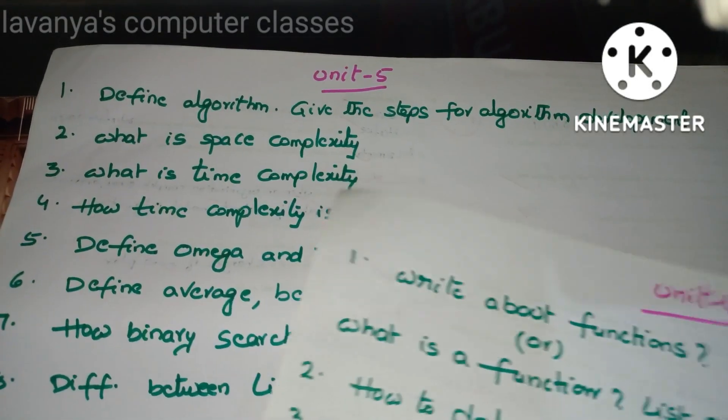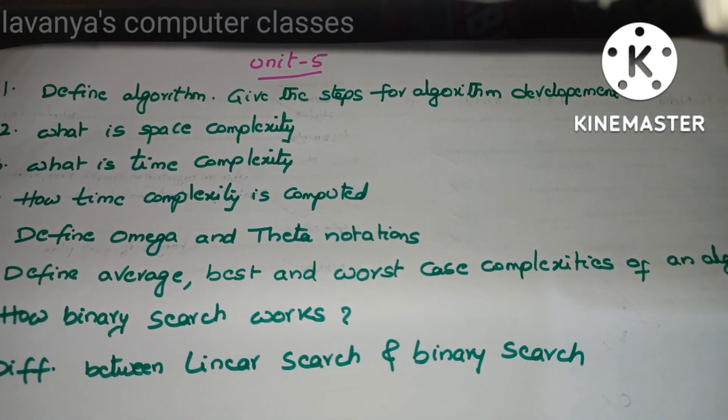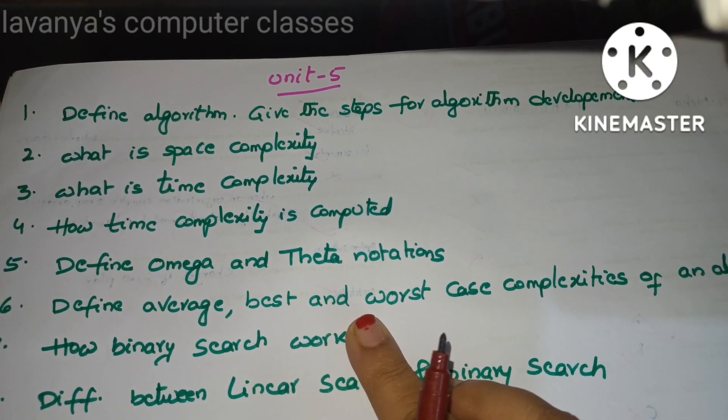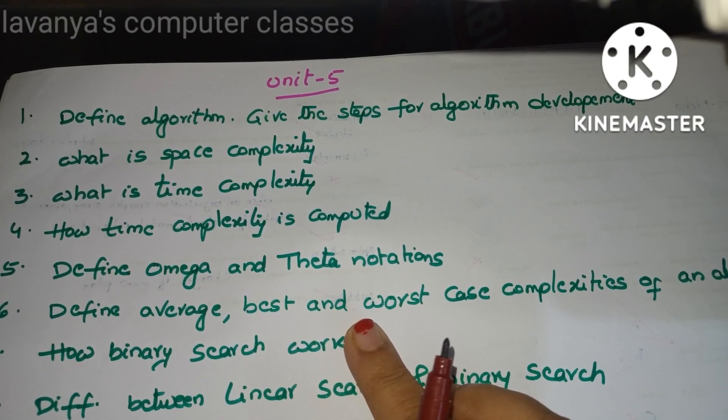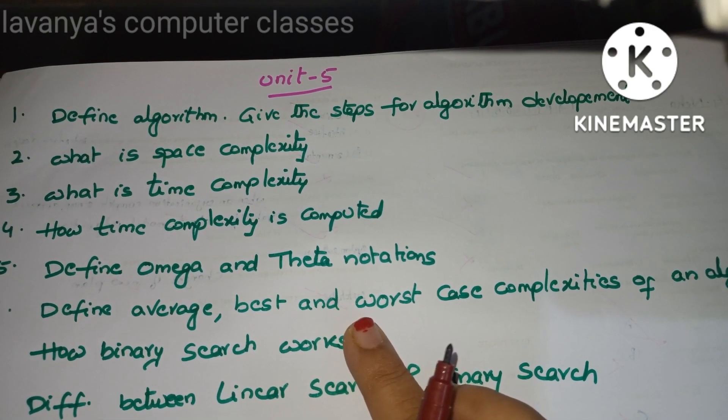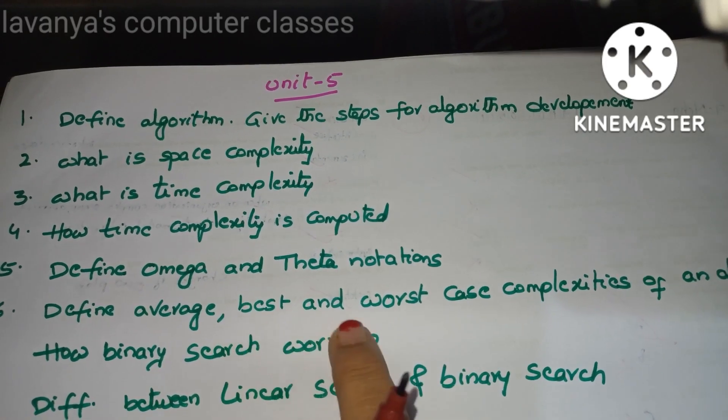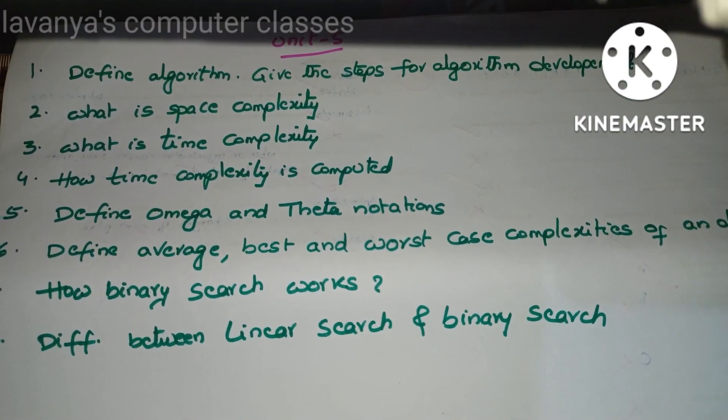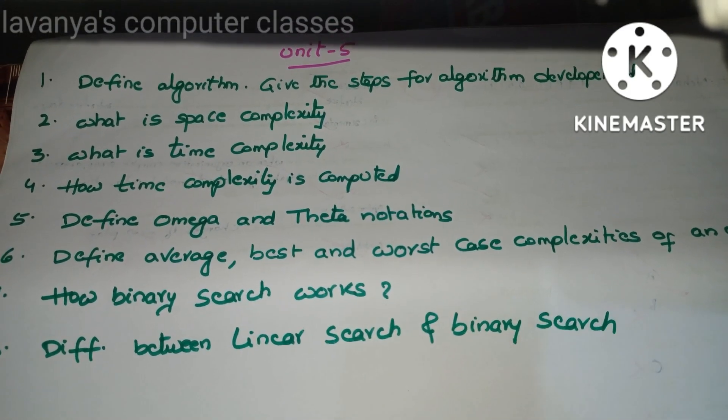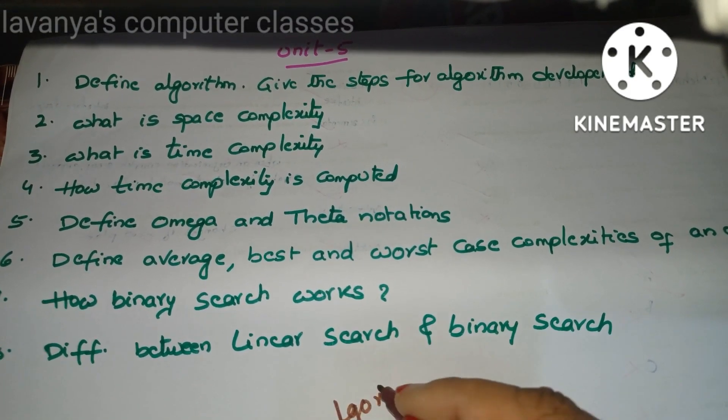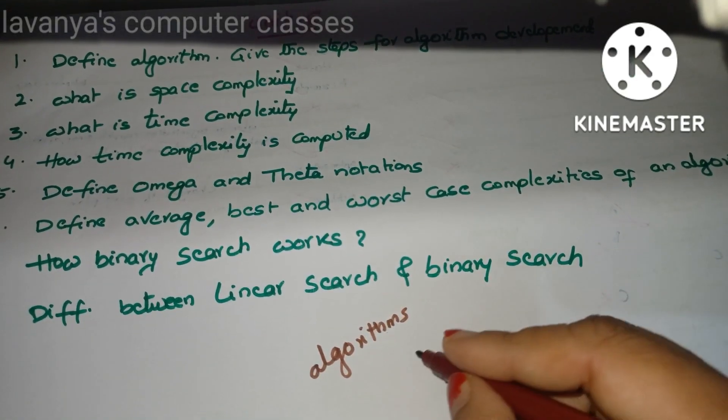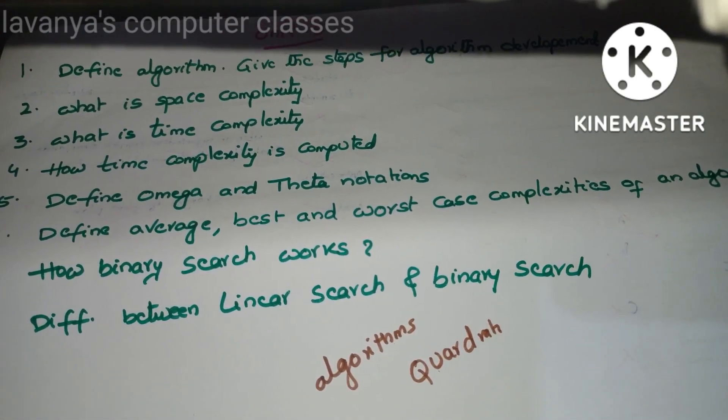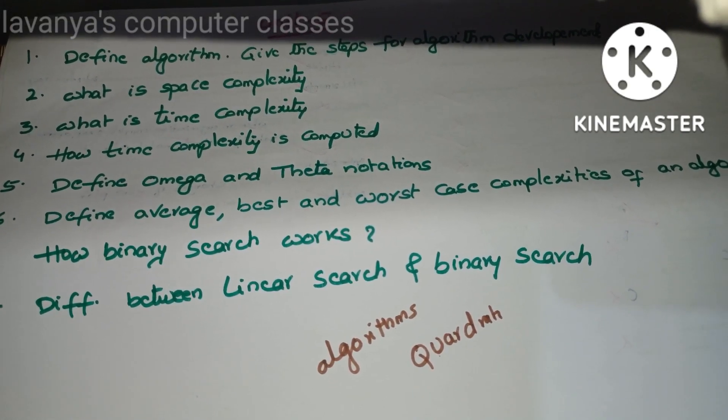Last one is Unit 5 important questions: define algorithm, write the steps for algorithm development. What is space complexity? What is time complexity? Next, how time complexity is computed? Define omega and theta notations, define average, best, and worst case complexities of an algorithm. How binary search works and difference between linear search and binary search. Also, sometime they are asking write algorithms, algorithm steps for any program like quadratic equation. It's already there in the syllabus: quadratic equation, linear search, and binary search. These are some few important questions and short answer questions according to unit-wise.